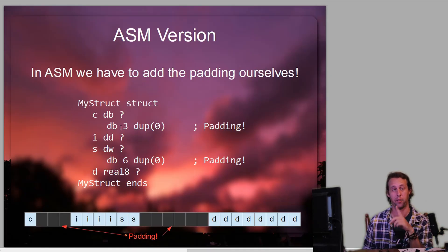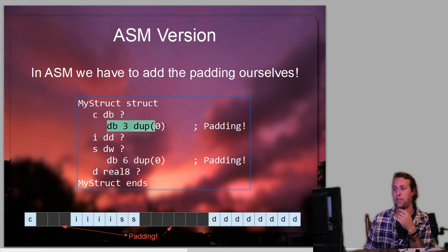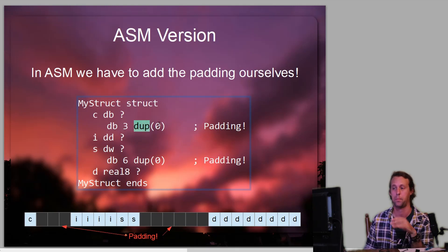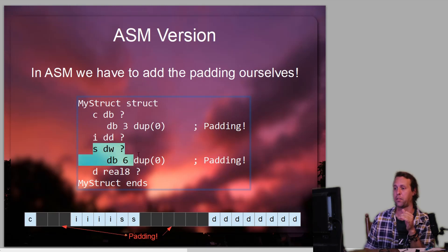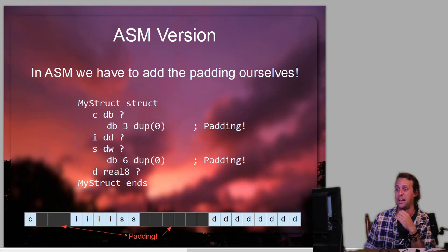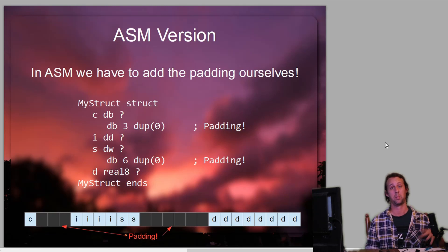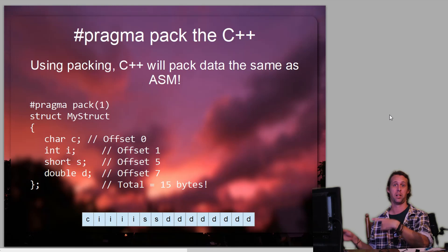So we can actually test this out. We have a couple of options in assembly. For one thing, we can leave the C++ structure as it is and pad our assembler structure to match. This right here is exactly the same structure as C++. My_struct struct: then we've got C as DB, or define a byte, and then three bytes of padding — 'three dup(0)' means duplicate zero three times. Then we've got our integer, then our short, then six bytes of padding, and finally our real8 or double. So you can make exactly the same thing in assembler as C++ if you know how C++ pads.